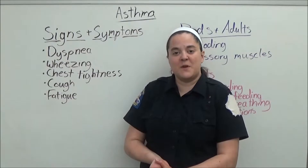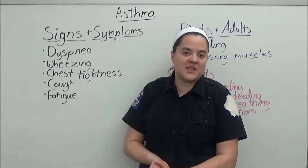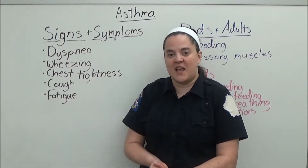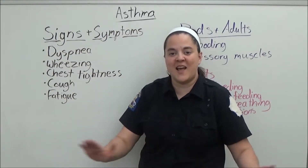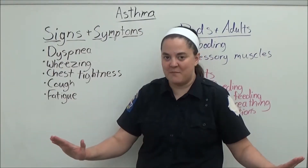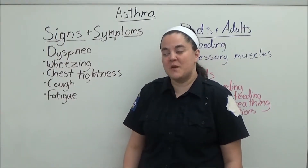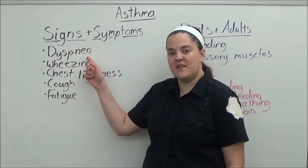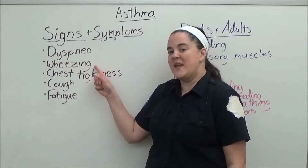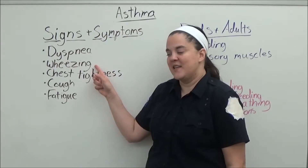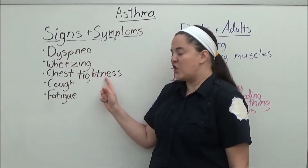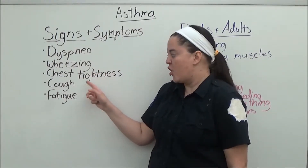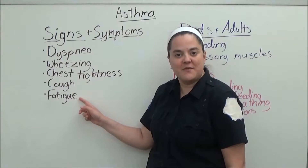The signs and symptoms for extrinsic asthma and for intrinsic asthma are exactly the same. Common signs and symptoms include dyspnea, wheezing, chest tightness, cough, and fatigue.